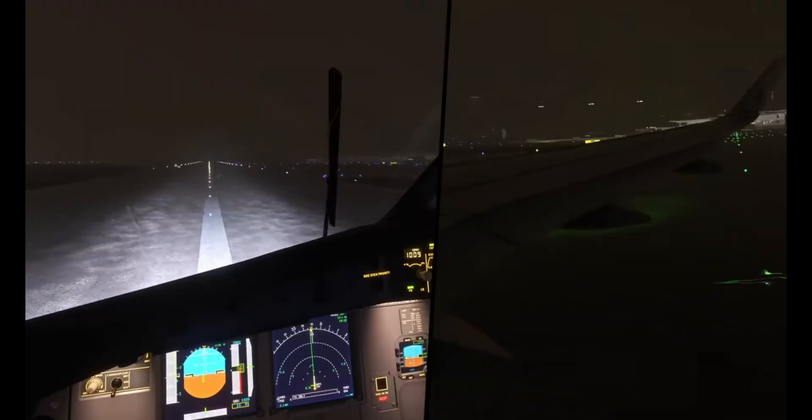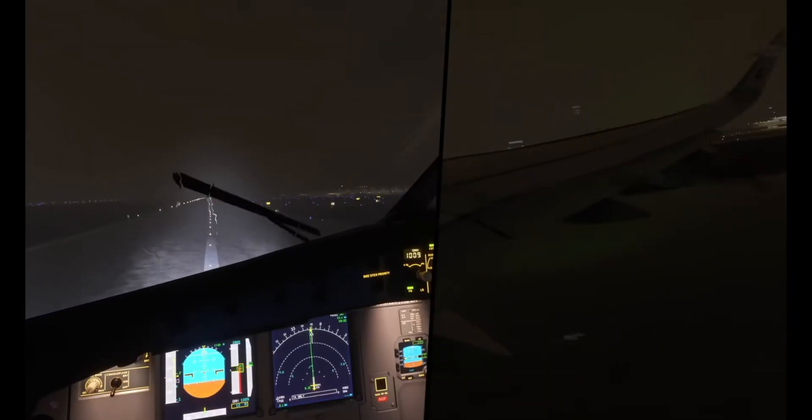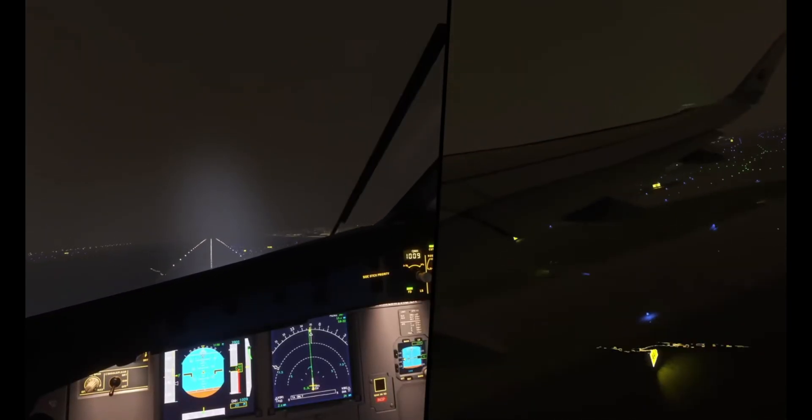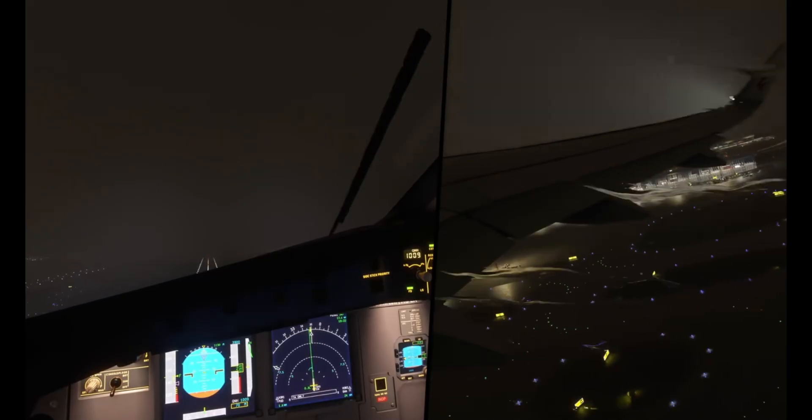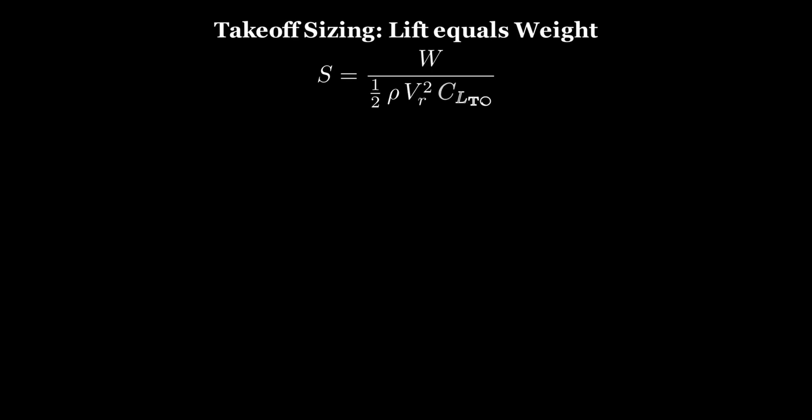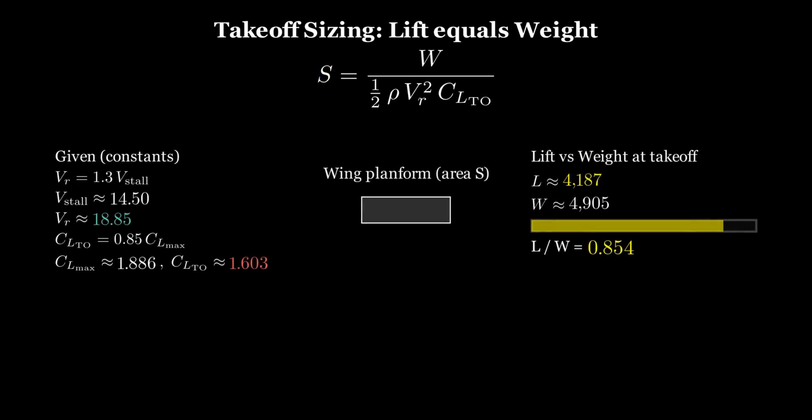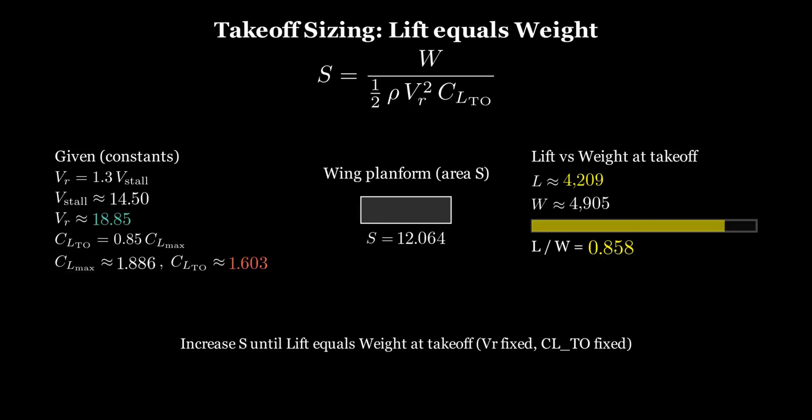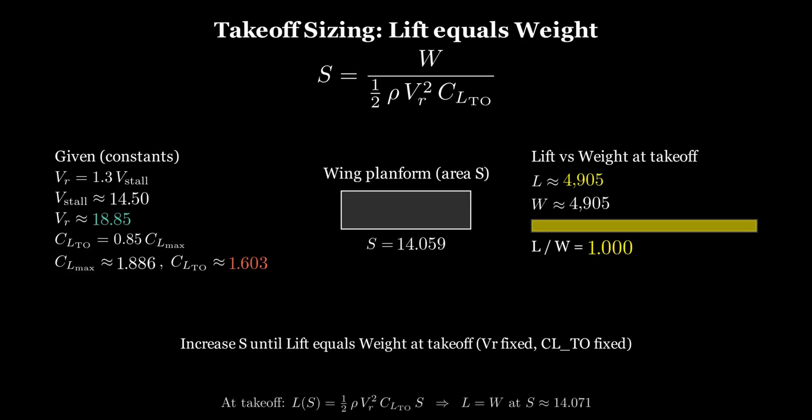When considering wing area, it's not just the stall condition that matters. The takeoff requirements also need to be met. In the end, I take the larger value between the two as the final wing area. The takeoff rotation speed, VR, is roughly 1.3 times the stall speed, and the takeoff lift coefficient is about 85% of the maximum lift coefficient. Considering a maximum takeoff weight of 500 kilograms, we can estimate that the wing area required to meet the takeoff requirement is about 14.071 square meters, so I select the larger of the two calculated wing areas for the main wing.